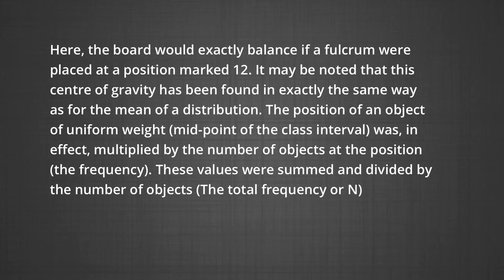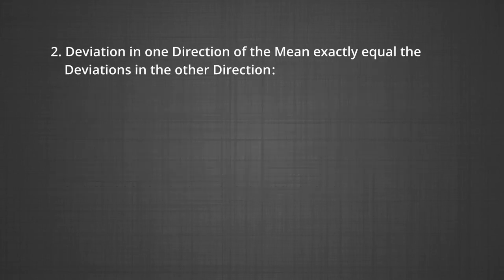The center of gravity is found the same way as the mean: the position (midpoint of class interval) is multiplied by the number of objects (frequency), these values are summed and divided by the total frequency n. Point 2: deviations in one direction of the mean exactly equal the deviations in the other direction. Since the mean is the center of gravity, the sum of deviations in one direction exactly equals the sum in the other direction, leading to the conclusion that the sum of deviations about the mean in any distribution is always 0.